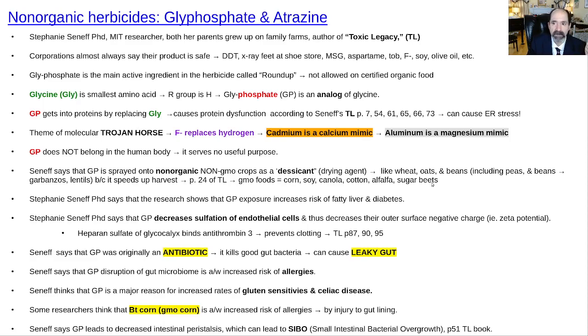Another point: only eat organic. Can you avoid all this stuff? Here's an example of some of the foods that are GMO and get sprayed with glyphosate as well: corn, soy, canola, cotton, alfalfa, sugar beets.